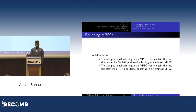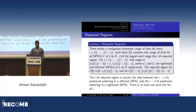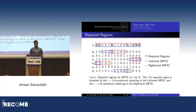Some less obvious bounds involve minima: the i-th positional substring must contain the first site before the (i+1)-th in the leftmost MPSC and the first site after the (i-1)-th in the rightmost MPSC. This region is shared between all i-th positional substrings across all MPSCs. We show this region is exactly the intersection shared by all positional substrings, and we call these the required regions. Here we have the required regions for i equals zero, one, two, and three.